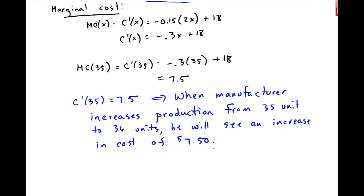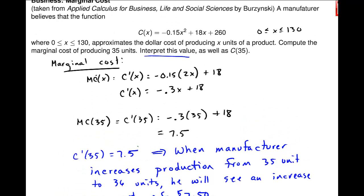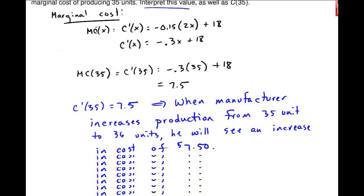We can also just go ahead and find the actual cost, C of 35. So when we find that, C of x, let me go back up and get this function. So there's my function: negative .15x squared plus 18x plus 260.